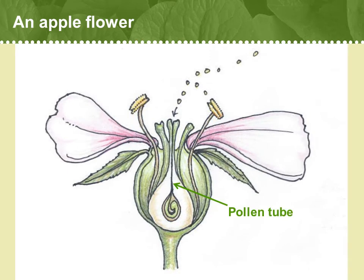Once the pollen grain has landed on the stigma, it sends down a pollen tube that grows downward through the style until it reaches the ovary, where it can fertilize the egg. At that point, a new plant has been born.